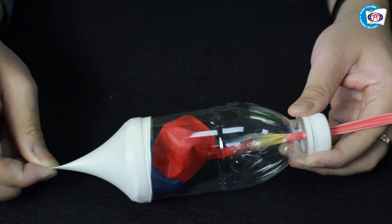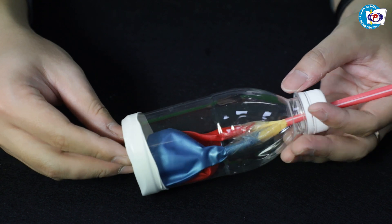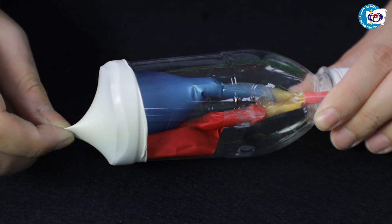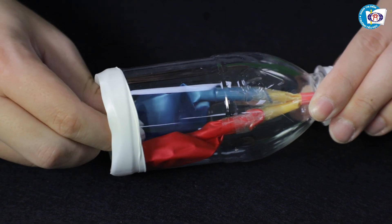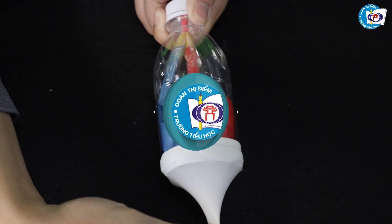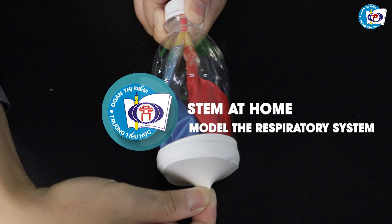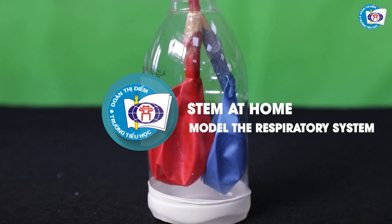Well, that's it guys. We've finished the respiratory model and its parts: the chest, the lungs, the windpipe, and the diaphragm. Please share this activity and knowledge with your families and friends. Stay home and stay safe. See you in the next STEM at Home video.